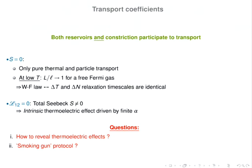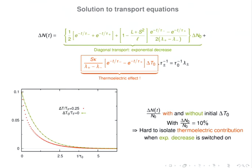So is there a good protocol to reveal these thermoelectric effects? The answer is yes. One must first look at the solution to the transport equation for a generic initial condition with both particle number difference and temperature difference. There are two contributions: a green diagonal transport contribution (approximately exponential decay) and a red thermoelectric contribution proportional to the initial temperature difference and to the global Seebeck coefficient. If delta-N(0) is nonzero, it is hard to distinguish the presence or absence of thermoelectric effects.